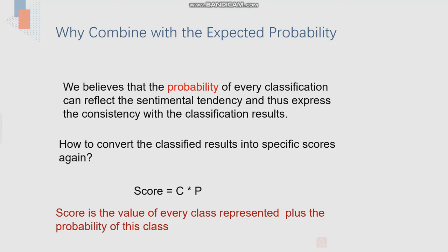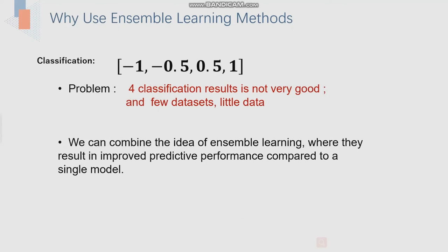How to do this? A score is the value of every class represented plus the probability of this class. Why we use an ensemble learning method? Because after 4 classification results, the result is not very good. So we can use it to improve the predictive performance compared to a single model.